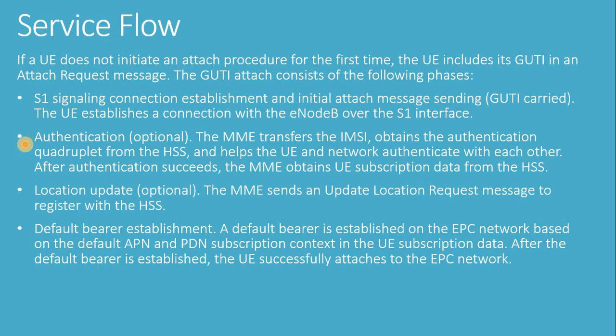Phase 2 - Authentication: The MME transfers the IMSI, obtains the authentication quadruple from the HSS, and helps the UE and network authenticate with each other. After authentication succeeds, the MME obtains UE subscription data from the HSS. Phase 3 - Location Update: The MME sends an update location request message to register with the HSS. Phase 4 - Default Bearer Establishment: A default bearer is established on the EPC network based on the default APN and PDN subscription context in the UE subscription data. After the default bearer is established, the UE successfully attaches to the EPC network.